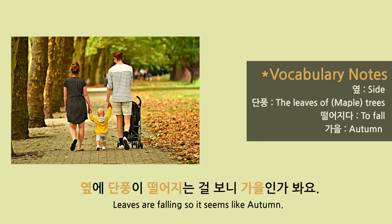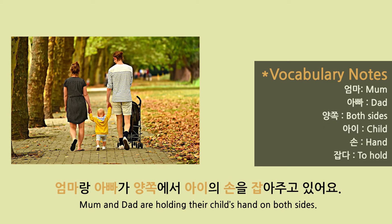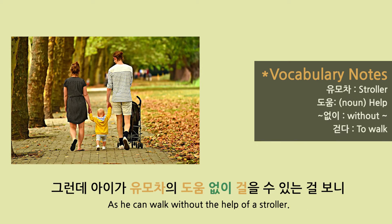It looks like it's winter. 옆에 단풍이 떨어지는 걸 보니 가을인가봐요. (Looking at the falling autumn leaves on the side, it seems like it's autumn.) 엄마와 아빠가 양쪽에서 아이의 손을 잡아주고 있어요. 그런데 아이가 유모차 없이 걸을 수 있는 걸 보니 (Mom and dad are holding the child's hands on both sides, and the child can walk without a stroller.)